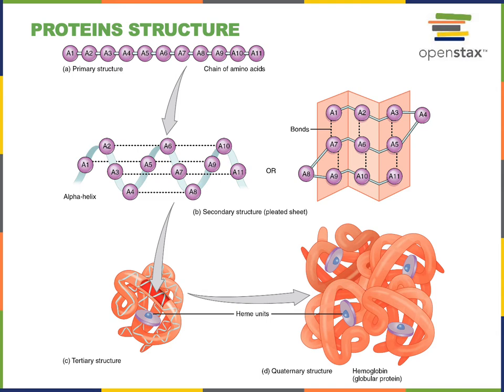A longer-distance interaction between amino acids will create another level of folding at a larger size scale, known as the tertiary structure of proteins. The tertiary structure of proteins can result from side chains of the amino acids that are hydrophilic facing out to form hydrogen bonds with the surrounding watery solution, and side chains of amino acids that are hydrophobic pushing inward away from the surrounding water. There are also covalent bonds that can form between some of the amino acids to add another level of stability to the tertiary structure.